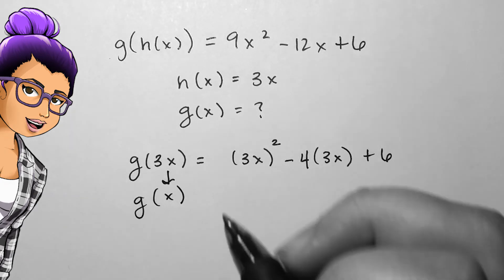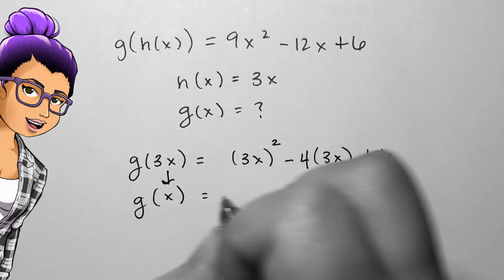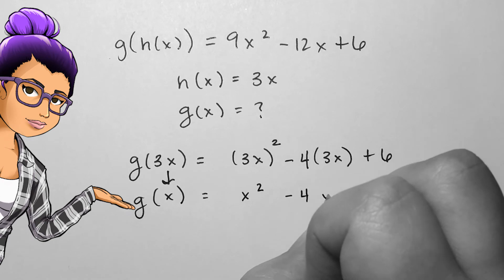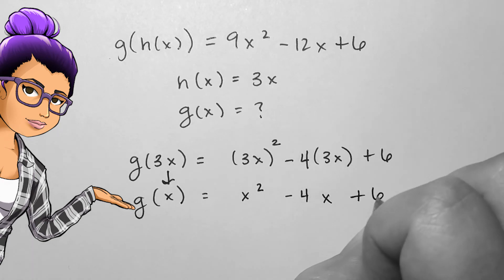Now, everywhere that I see the 3x, which is h of x, I could now decompose out and leave an x in its place. This would mean that g of x equals x squared minus 4x plus 6.